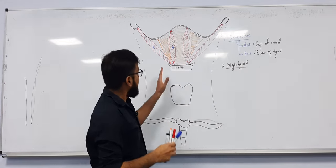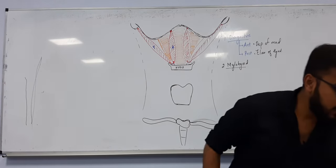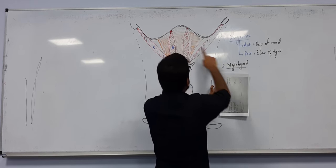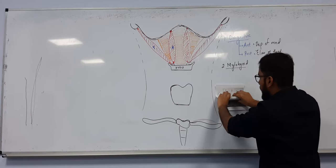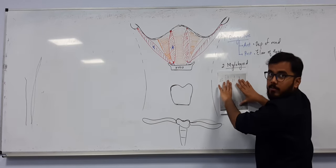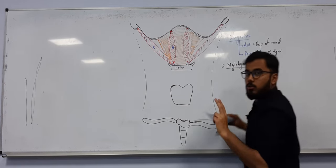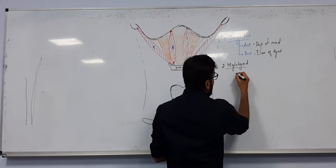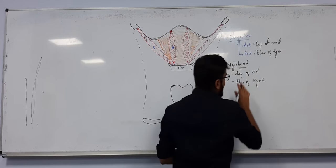The function of the mylohyoid muscle: on top it is attached to the inferior margin of the mandible, and on the bottom it is attached to the hyoid bone. When contracted, the top fibers pull the mandible downward and the bottom fibers pull the hyoid upward. So the mylohyoid also has two functions: depression of mandible and elevation of hyoid.